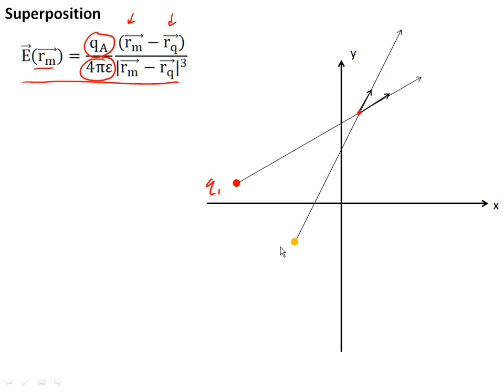What happens if we add a second charge? Let's call this charge q2. Well, it's going to map another vector pointing away from the second charge. If we add a third charge, exactly the same thing.